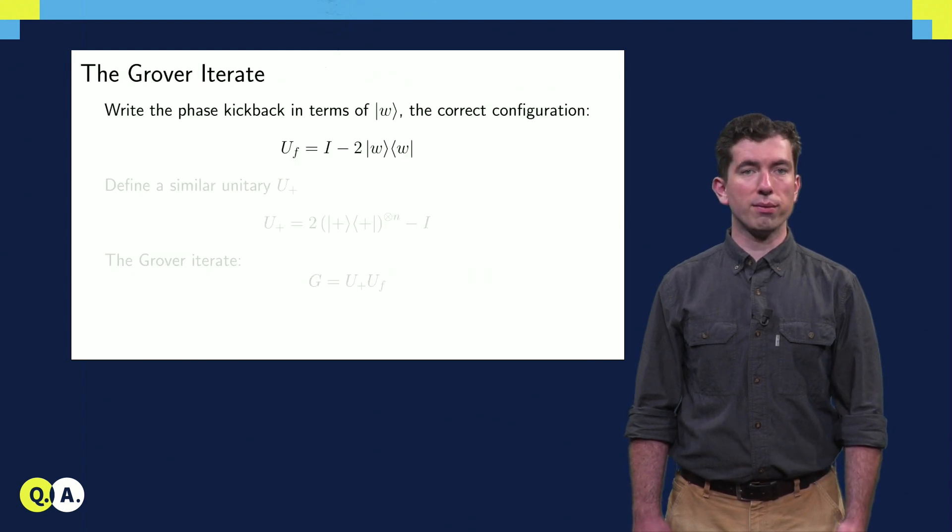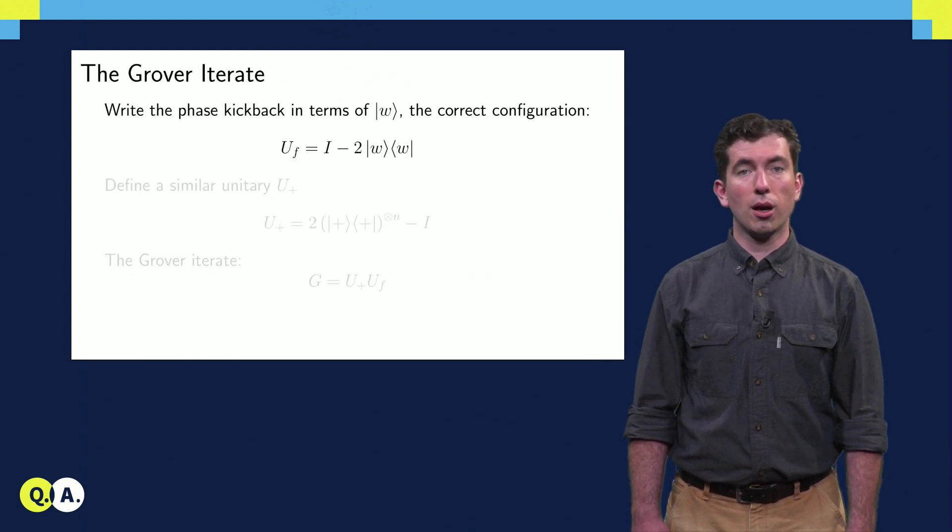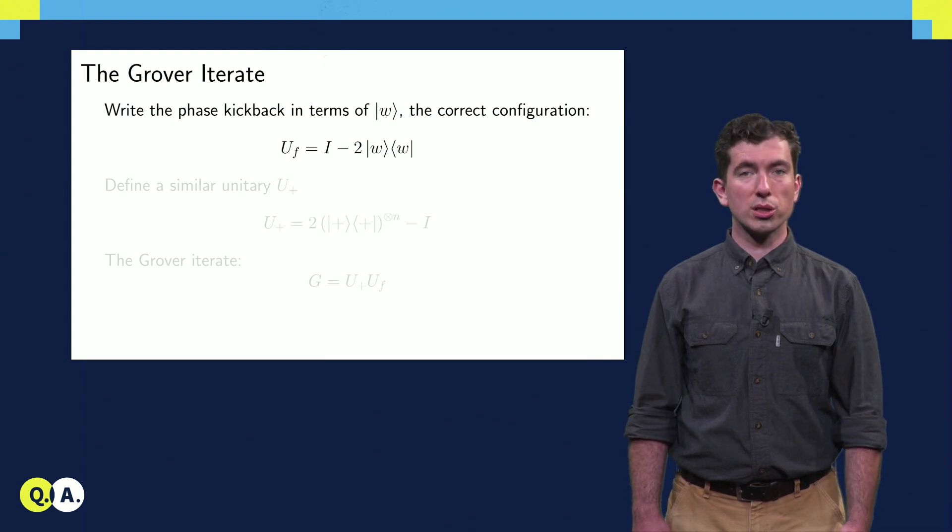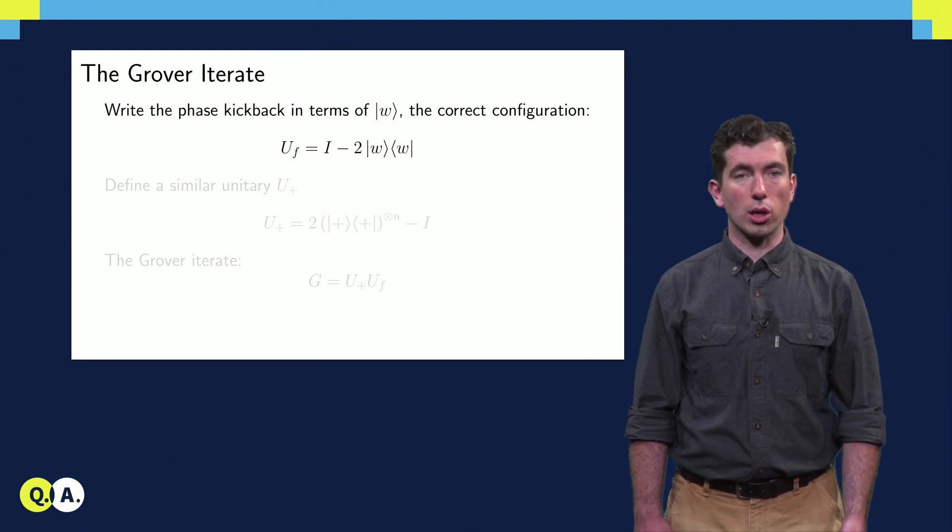We can see that the operation UF can be written as the identity minus 2 times WW. If this is unclear, pause the video and take a moment to evaluate the action of this operator on the state W, and on other states which are orthogonal to W.